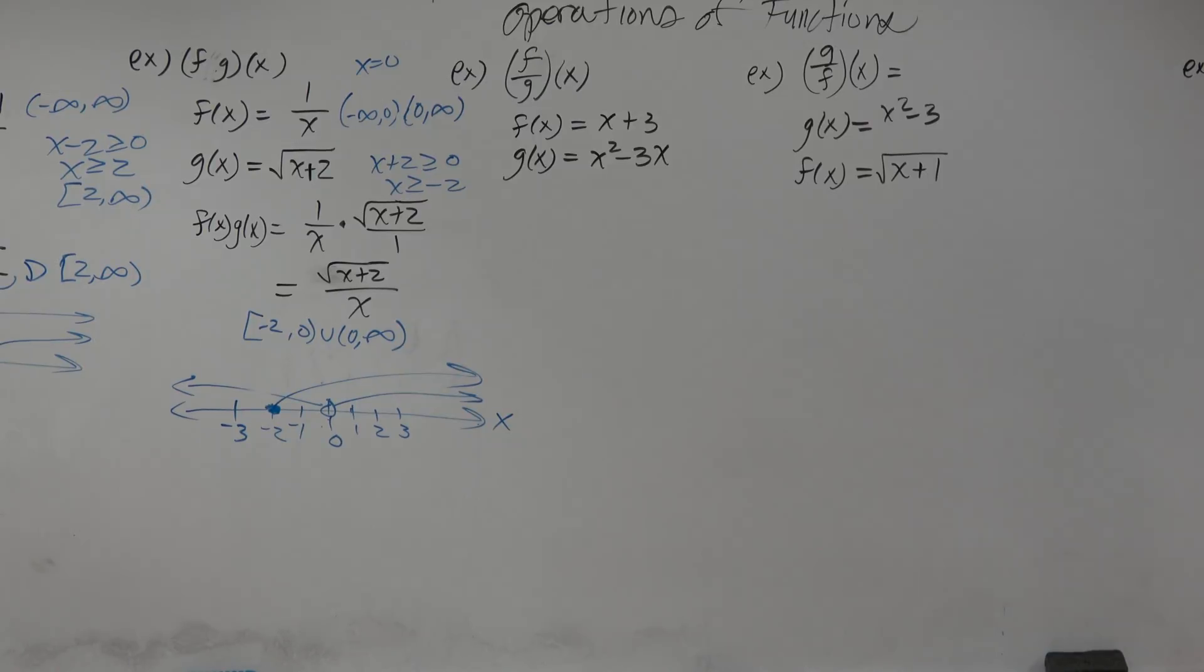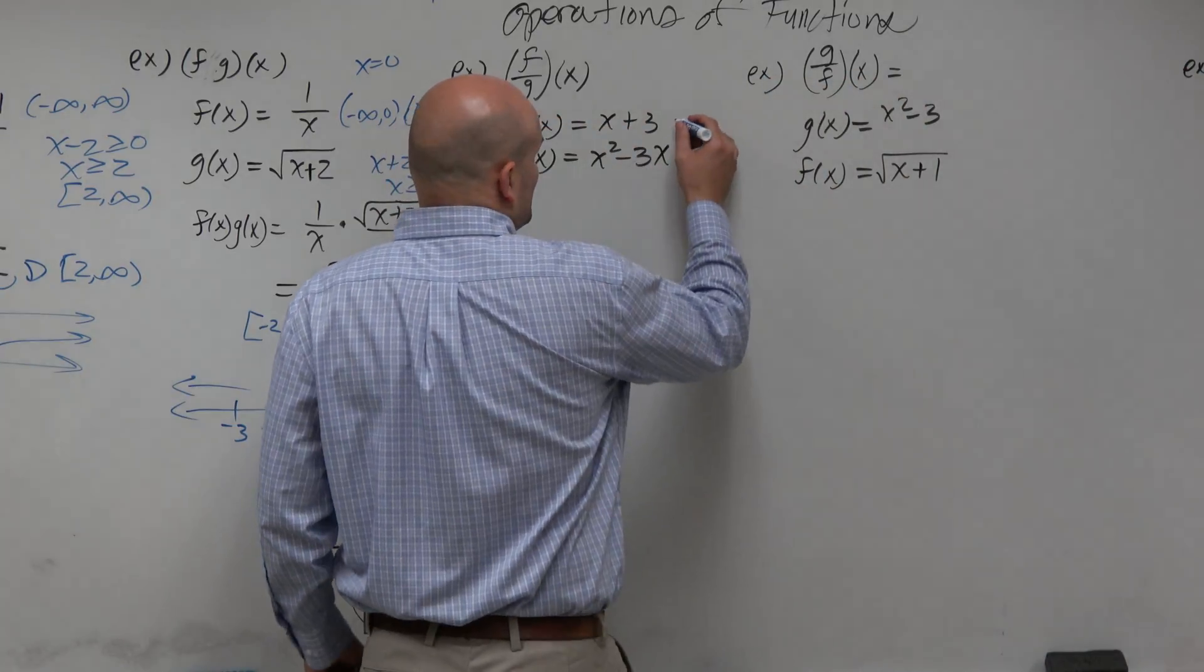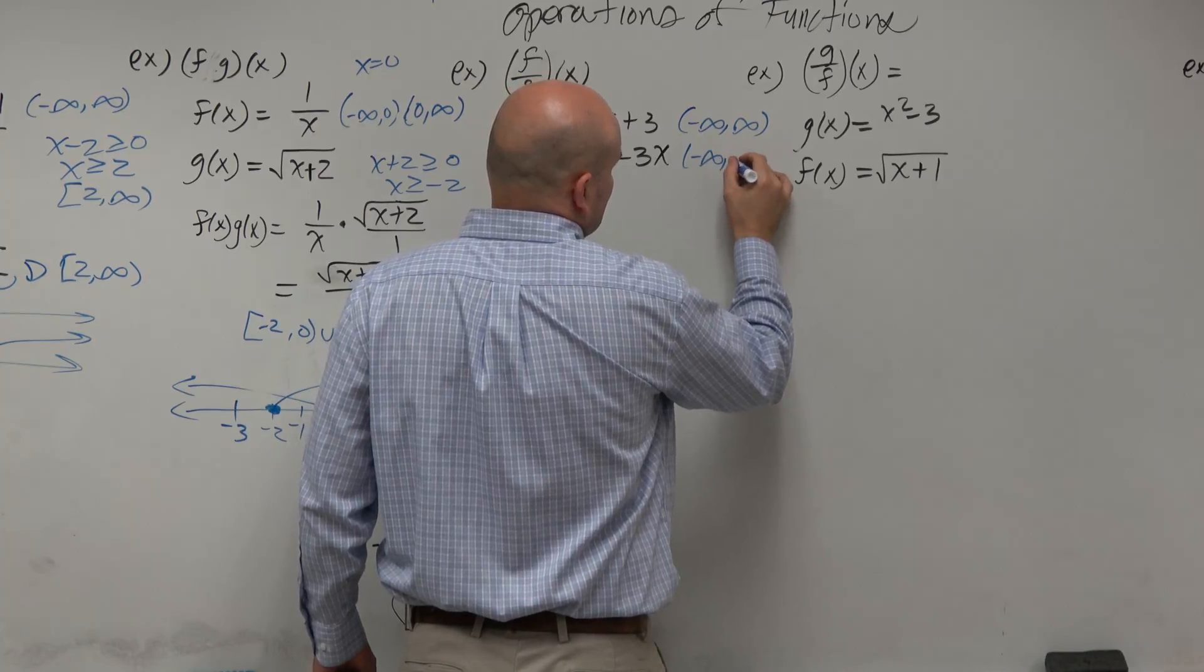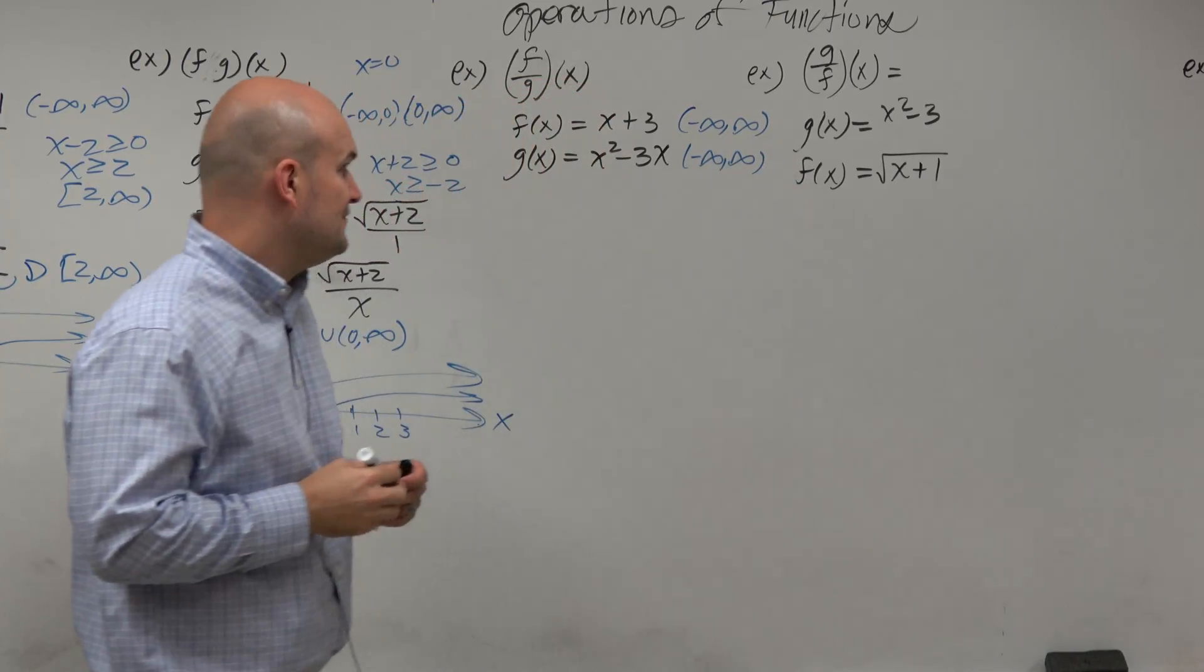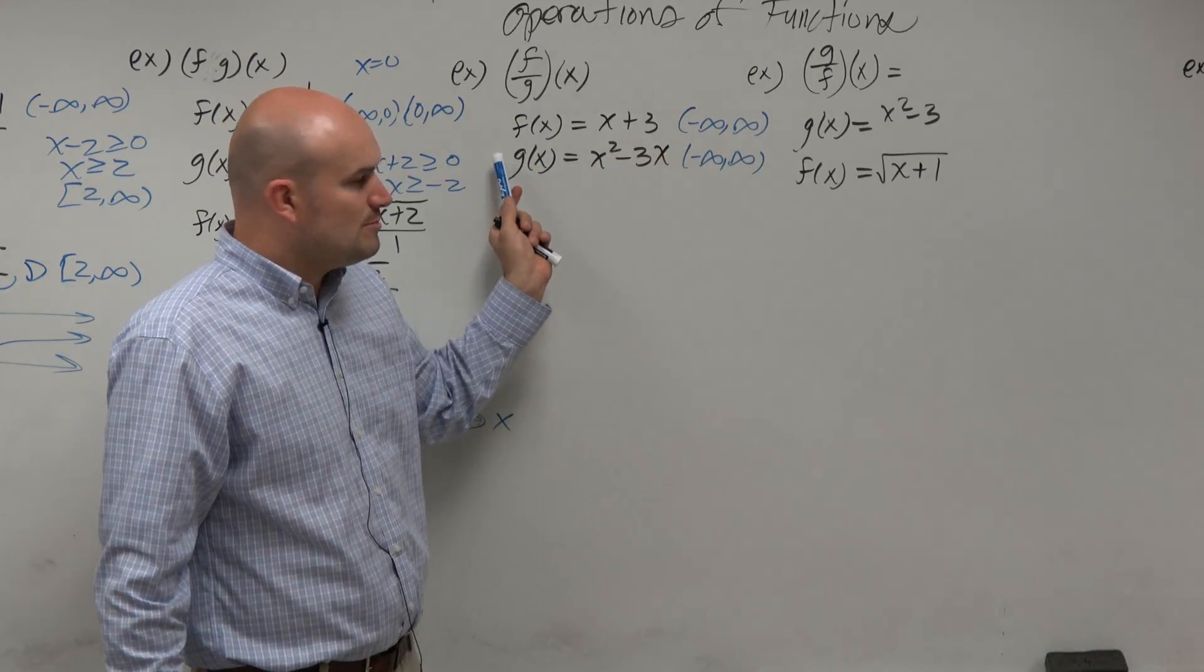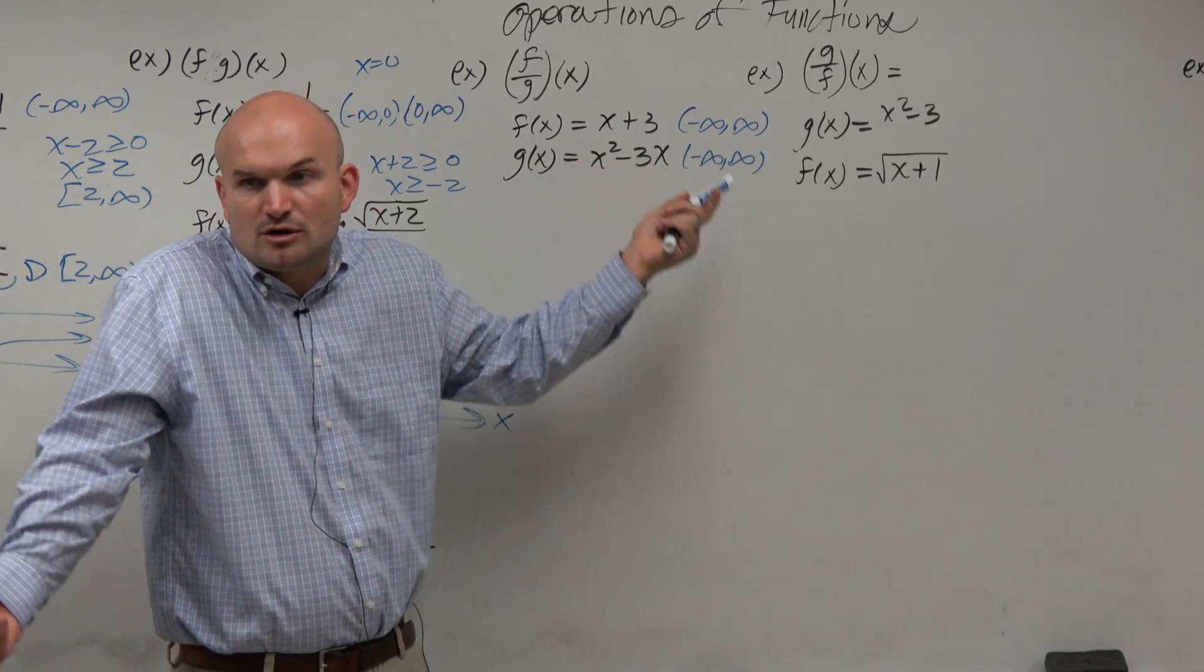If you notice in the first three examples, one of the helpful tips when defining the domain was to find the domain first of the two functions. If you look at the domain of f(x), that's linear, so that's all real numbers. If you look at the domain of g(x), that's quadratic. That's all real numbers, right?